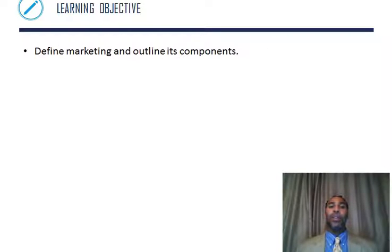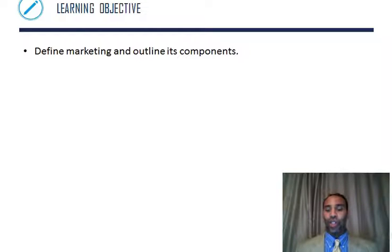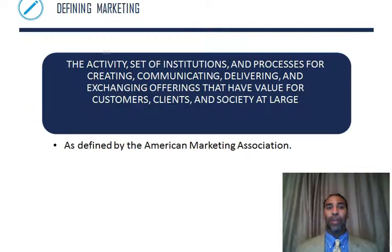A learning objective: define marketing and outline its components. Whenever you go into a chapter or a course, you need to know what the objectives are and then go about trying to achieve those objectives — whether that's looking at the syllabus and figuring out the student learning objectives or the learning objectives for the chapter.